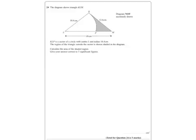Now we can't do anything without finding the size of this angle, essentially. And we're going to do that using the cosine rule. You can find it at the front of the paper, but it's basically 12.6 squared equals 10.4 squared plus 18 squared minus 2 times 10.4...